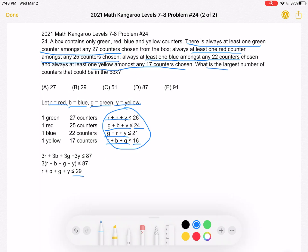And we're looking for the largest number of counters that could be in the box. So 29 is that largest number and that is answer choice B.